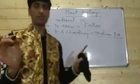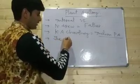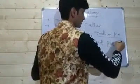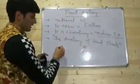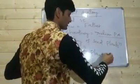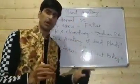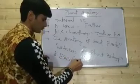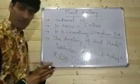There is a very famous book written on plant anatomy. The book's name is 'The Anatomy of Seed Plants,' also called the 'Webster's of Plant Biology.' It was authored by K. Esau in the 1960s. This book has a huge content of information about the science.